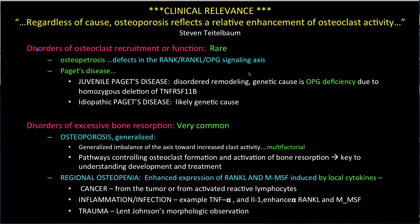Understanding and simplifying these basic science concepts will stand you well as a clinician, as Teitelbaum's quote attests. Osteopetrosis is rare. It presents as increased bone formation and is due to defects in which osteoclast recruitment or function is defective. The defects are in the RANKL-OPG signaling axis. Paget's disease, a condition of disordered remodeling, may manifest as increased bone formation and will likely be found to be a genetic defect in the signaling axis. The juvenile form of Paget's is due to osteoprotegerin deficiency.